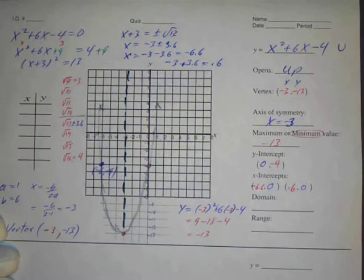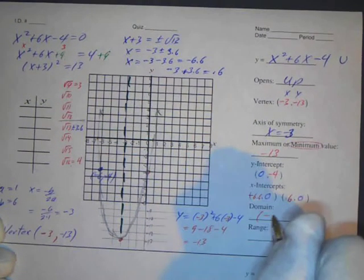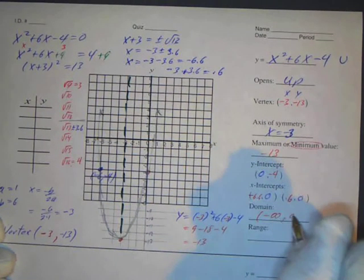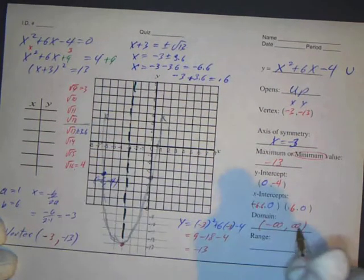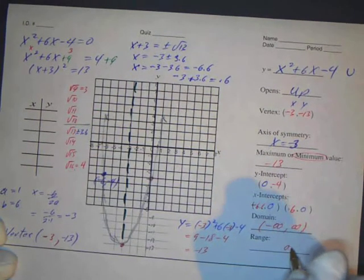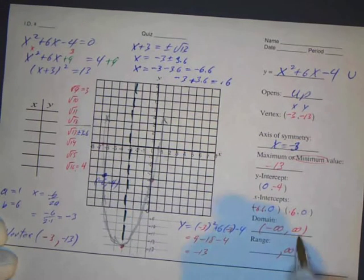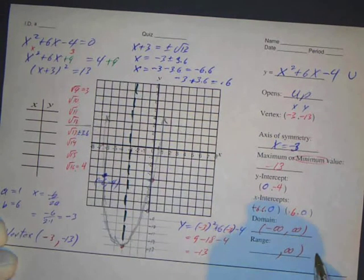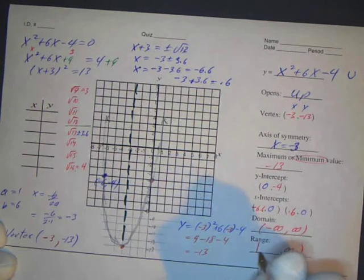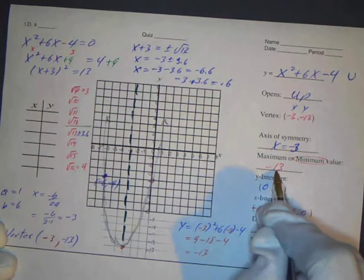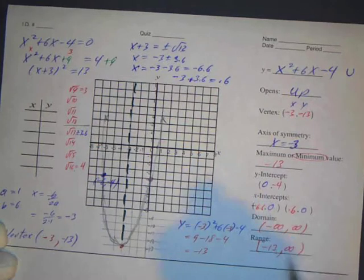The domain extends in both directions, so it's negative infinity to infinity. Looking at the endpoints of the graph, the parabola goes up toward infinity in both directions. The range starts at the minimum y-value with a bracket — negative 13 — and goes up to positive infinity, so the range is [negative 13, positive infinity).